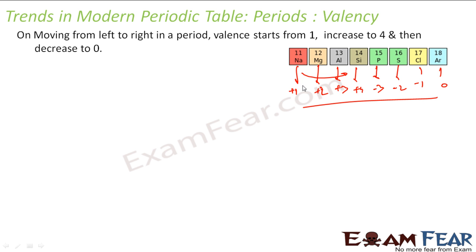If you see, it started from 1, increased till 4, again went back to 0 because they all are inert gas and they have valency of 0. So, this is how the valency behaves from 1 to 4, then it goes back to 0.